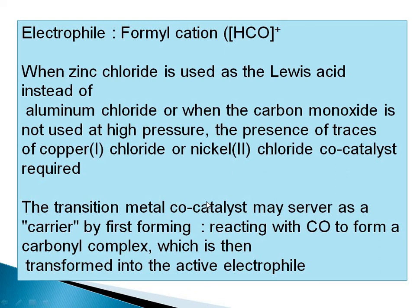In Gattermann-Koch, zinc chloride is used as Lewis acid (instead of aluminium chloride), or at high pressure. When zinc chloride is used without high pressure, a co-catalyst of copper chloride or nickel(II) chloride is needed. Normally, aluminium chloride is used. A transition metal co-catalyst acts as a carrier, forming a carbonyl complex with carbon monoxide to generate the active electrophile.